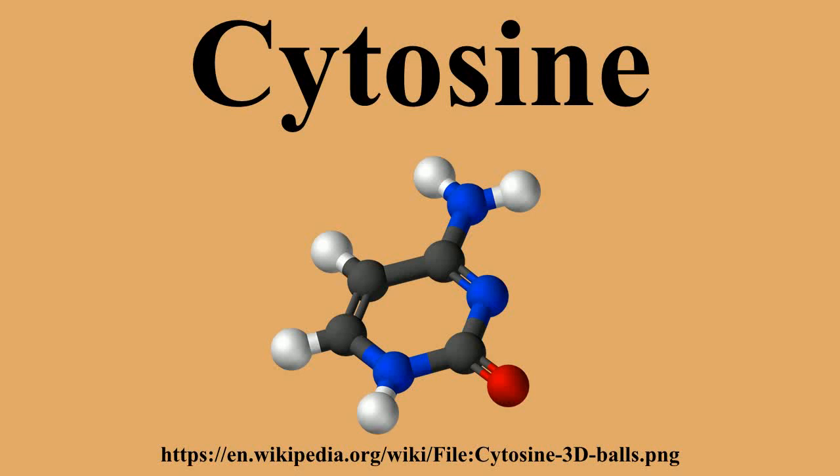Cytosine can be found as part of DNA, as part of RNA, or as part of a nucleotide. As cytidine triphosphate, it can act as a cofactor to enzymes, and can transfer a phosphate group to convert adenosine diphosphate to adenosine triphosphate.